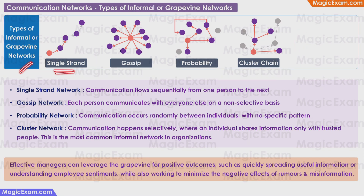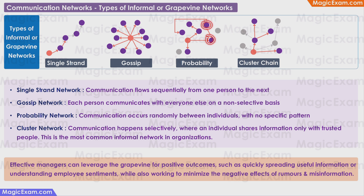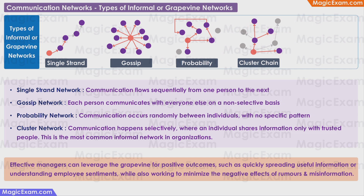In informal communication networks: in a single strand network, communication flows sequentially from one person to the next. In a gossip network, each person communicates with everyone else on a non-selective basis — if there is an opportunity, the information or gossip is passed on. In a probability network, communication occurs randomly between individuals with no specific pattern — at every step the information may or may not flow to all connections, so some people may receive it and others may not. In a cluster network, communication happens selectively where an individual shares information only with trusted people — this is the most common informal network in organizations. Even though all persons in the cluster network are directly or indirectly connected, some may still not receive the information because it is being selectively shared. For example, all female employees of the organization may share information about the behavior of a particular senior person, but may not be comfortable sharing it with their male colleagues.